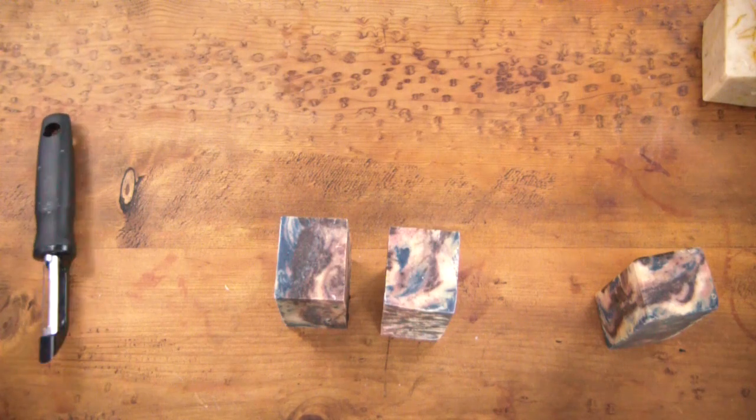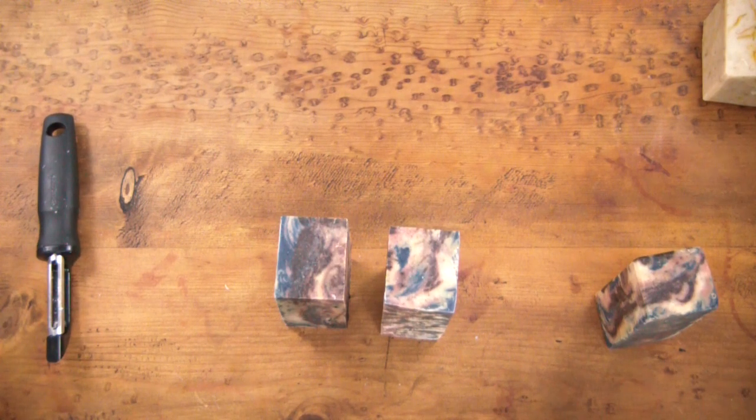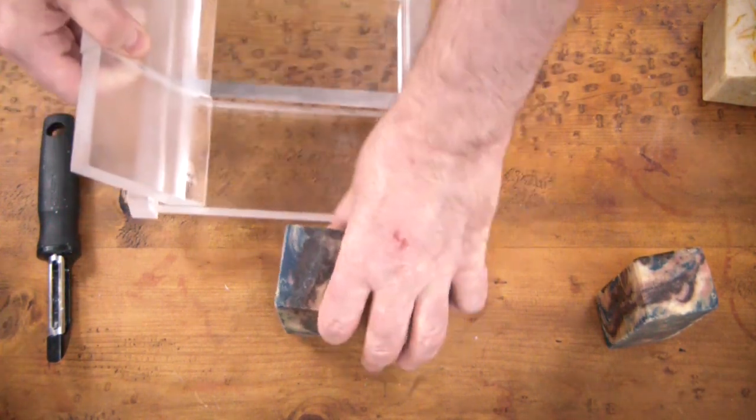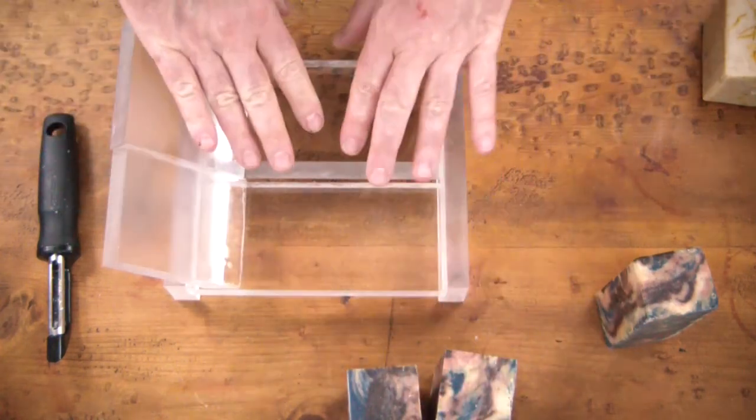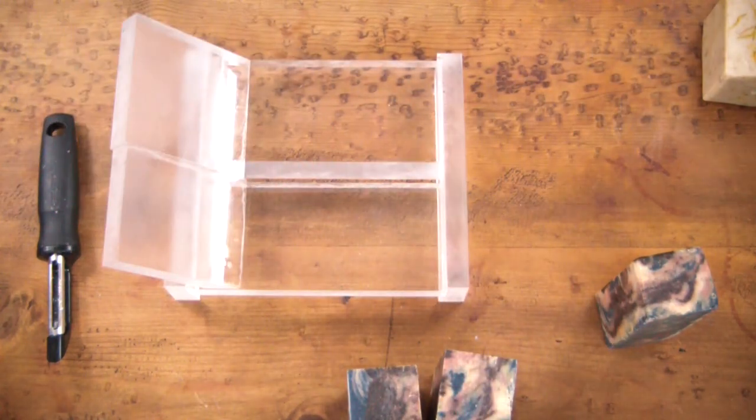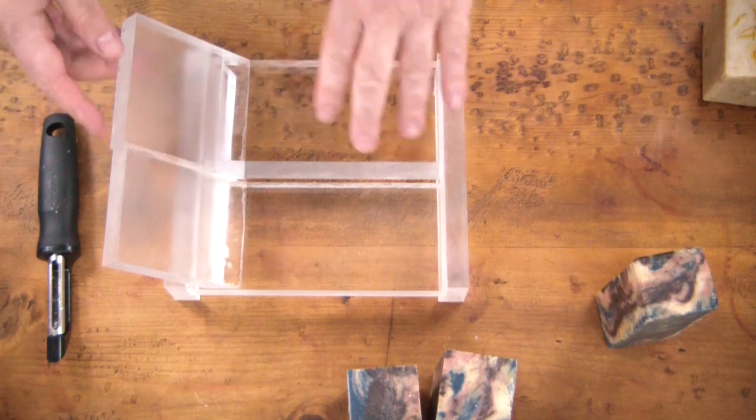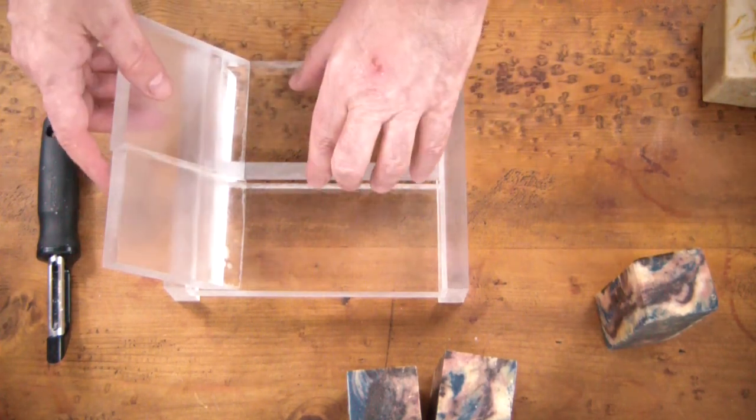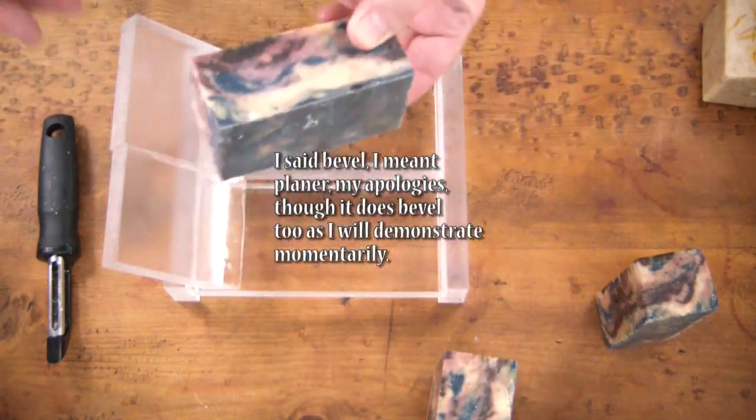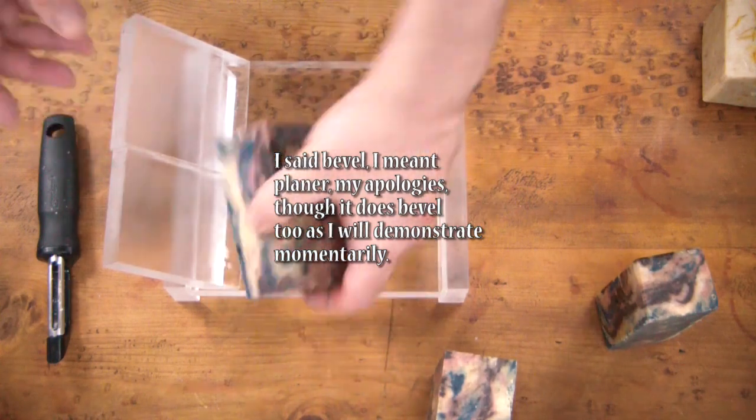What I'm showing you here is that sometimes I use a vegetable cutter, and sometimes I use this little device which is a planer and a beveler. One thing I can tell you, it is great at beveling and doing corners.